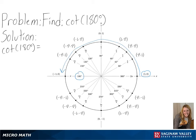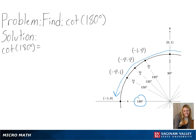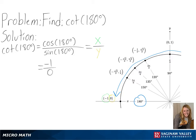Since we are finding the cotangent value, we will need to find the cosine over the sine value, or the x over the y value, since that will give us our cotangent value. We can see here that we get negative 1 over 0, and since we cannot divide by 0, our answer is undefined.